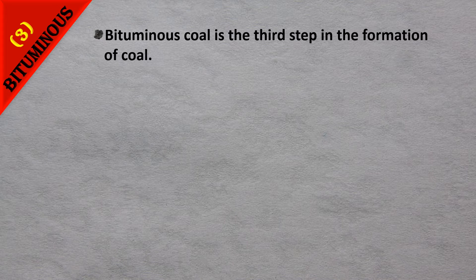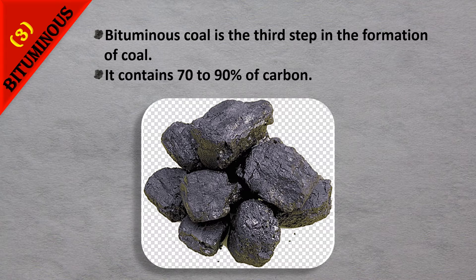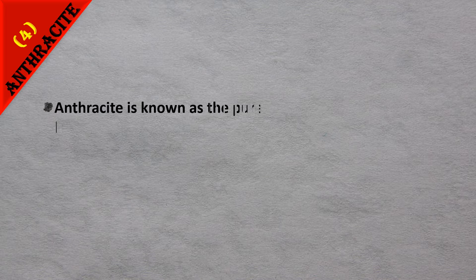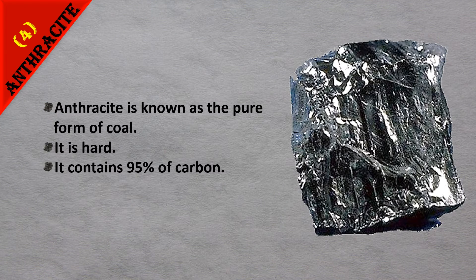The third type is bituminous, which is the third step in coal formation, containing 70 to 90% carbon. And finally, anthracite — known as the pure form of coal. It is hard and contains 95% carbon.